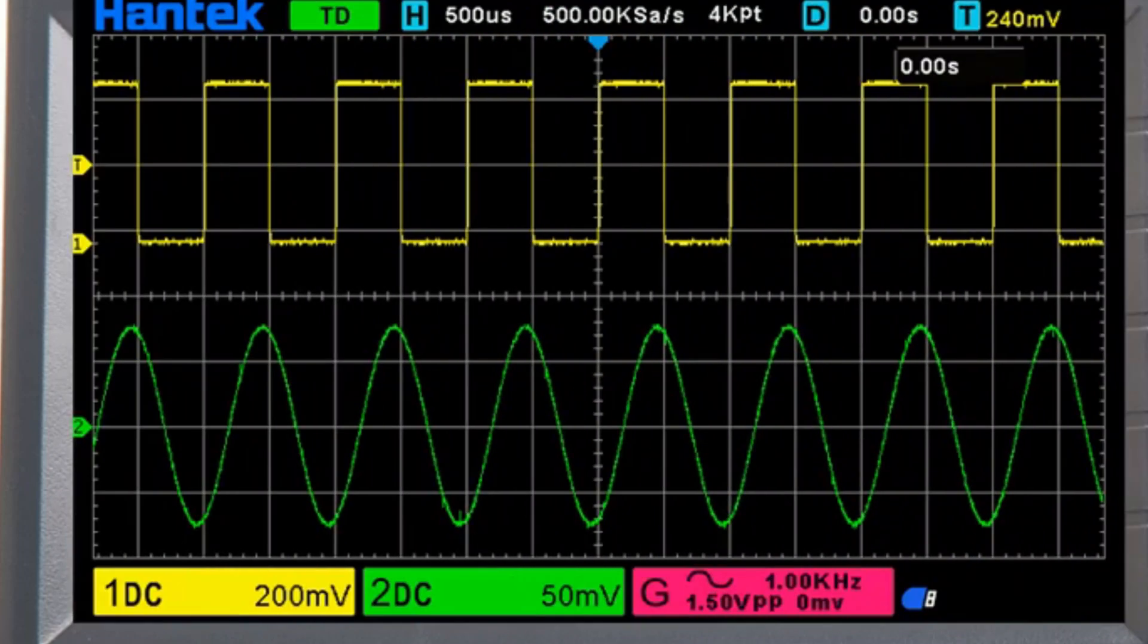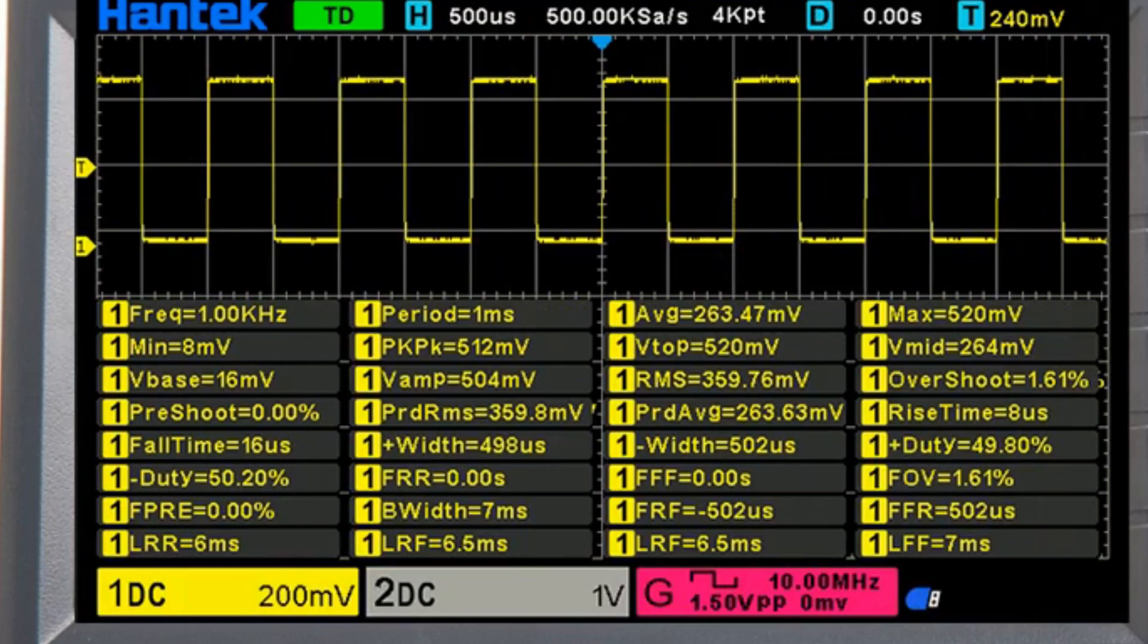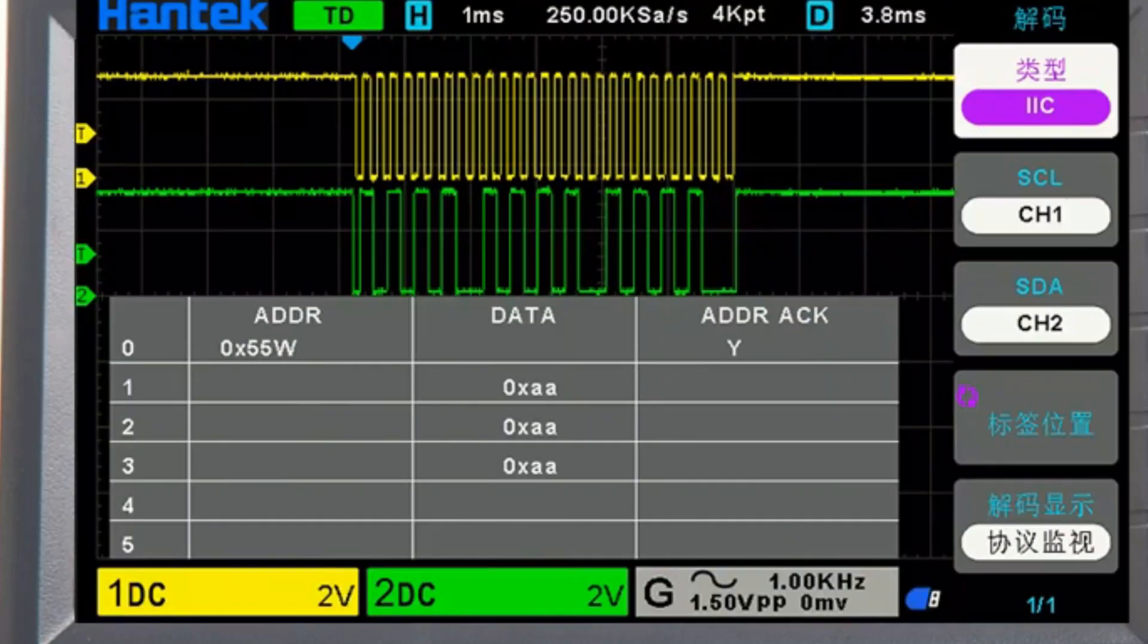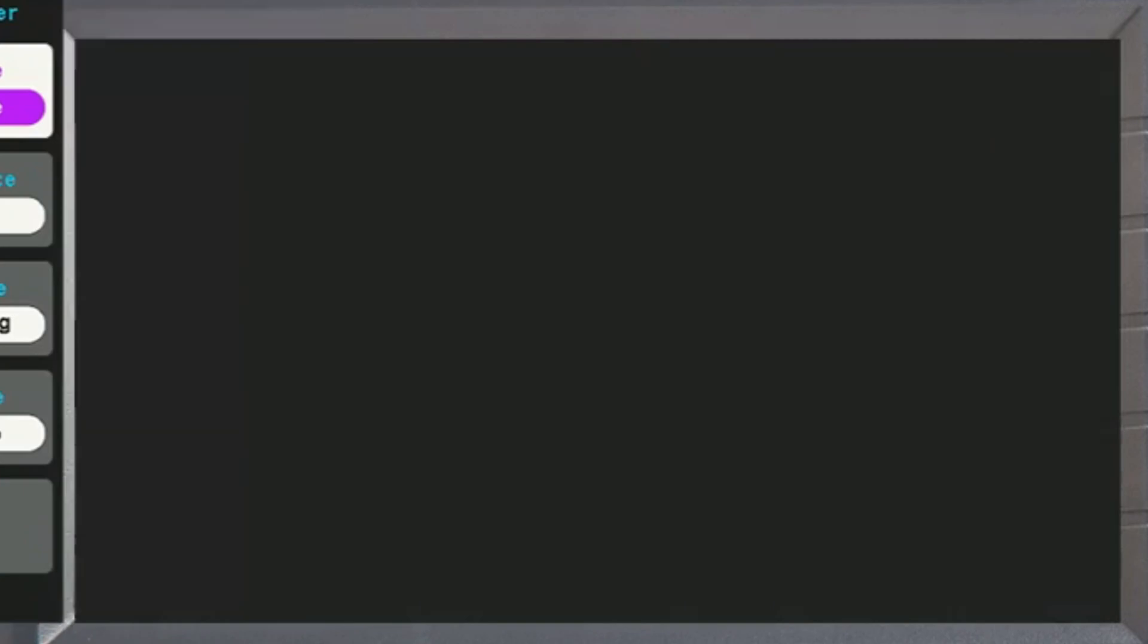The DSO2-D15 features a real-time sampling rate of 1 GSa/s, allowing for accurate capture of even the fastest signals. Its 800-480 pixel display provides clear visualization of waveforms, enabling easy analysis of intricate details.